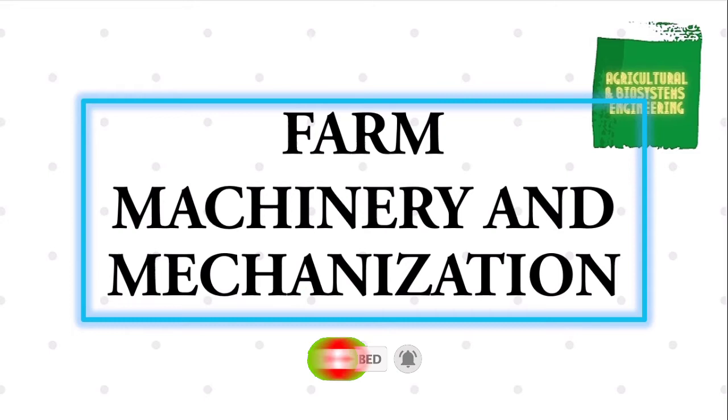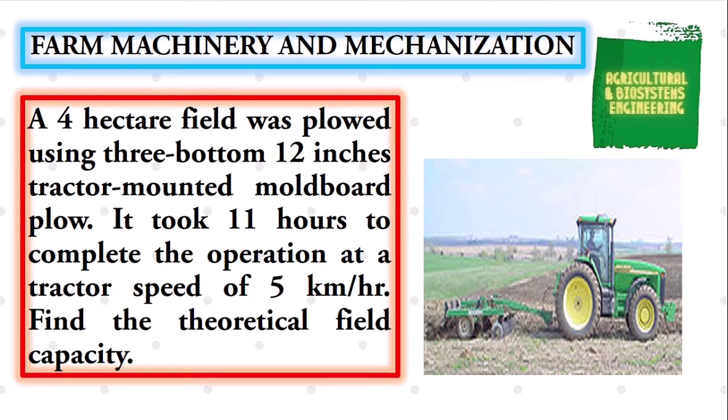This time, we will be solving this problem. A 4-hectare field was plowed using 3 bottom 12-inches tractor-mounted moldboard plow. It took 11 hours to complete the operation at a tractor speed of 5 kilometers per hour.